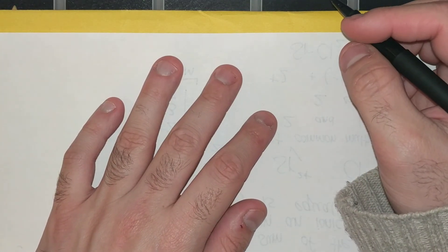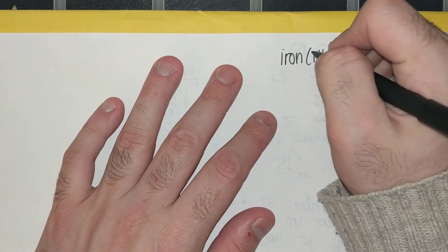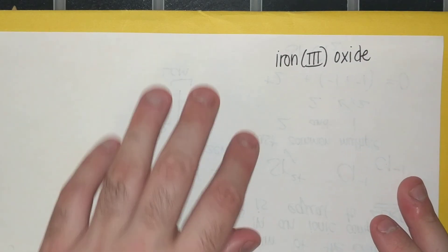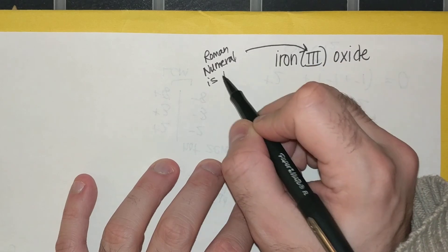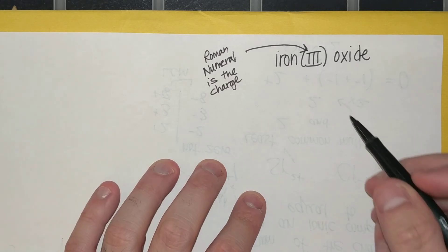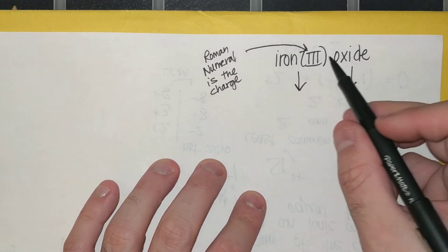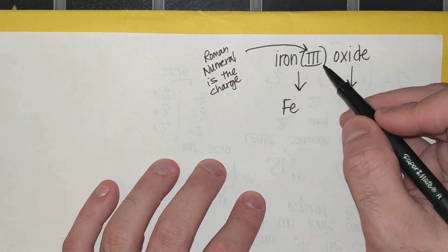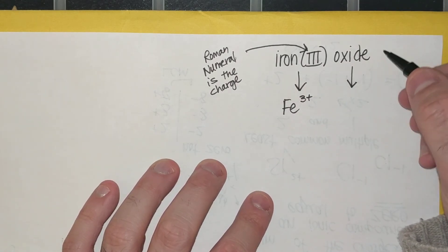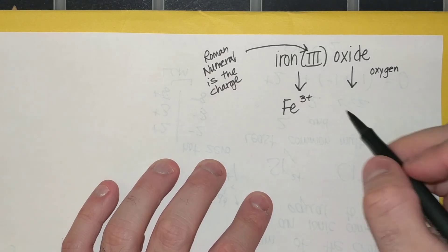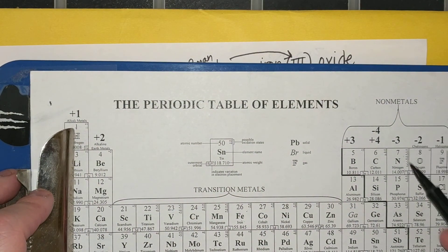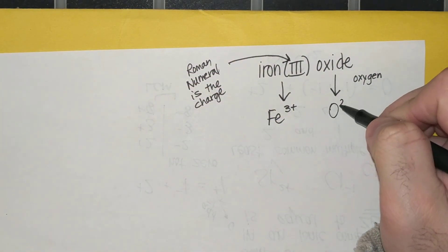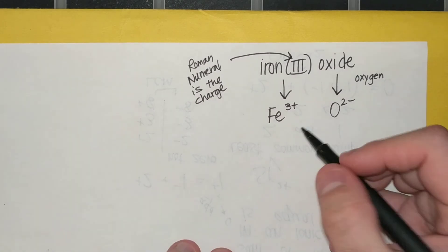Let me do another example — this time I want to do a transition metal. Let's say I want to do iron three oxide. Remember, the Roman numeral for transition metals indicates the charge. So if I want to identify the symbol and charge: iron is Fe, and the Roman numeral already tells me the charge is positive three. Oxide comes from oxygen. If I look on the periodic table, oxygen is in group six and forms a negative two charge. So I write O two minus.